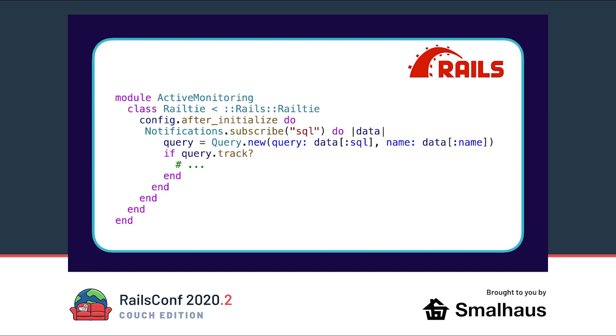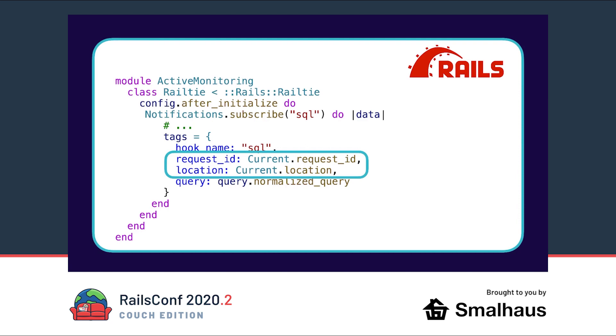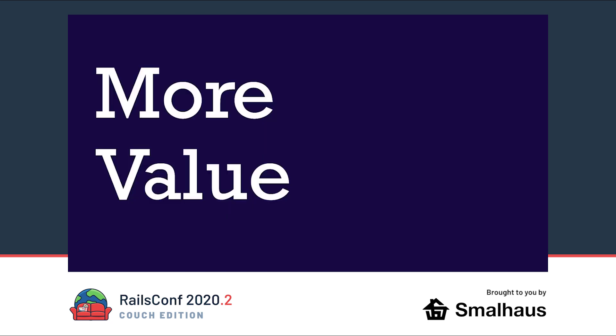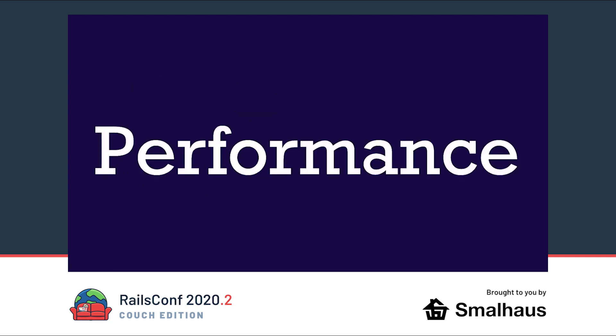If we put everything together, we first check if we want to track this query, then fetch the current location and request ID from our current attributes, fetch the normalized query, and then store everything in our InfluxDB. In this chapter we had a look at cleaning, normalizing, and grouping our data. The processing step is necessary so our metrics provide more value and insights later on. The downside is that we add some additional time to our response time — we could implement the normalization step in a C library or move it to a background job if this is a concern.